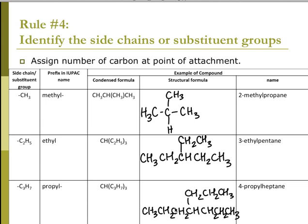Counting 1, 2, 3, 4, 5, 6, 7 — I have 7 carbons in the longest chain, so I have a heptane. Off the 4th carbon, I have a propyl group, because I have 3 carbons — so 4-propylheptane.